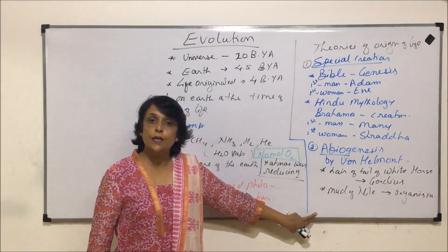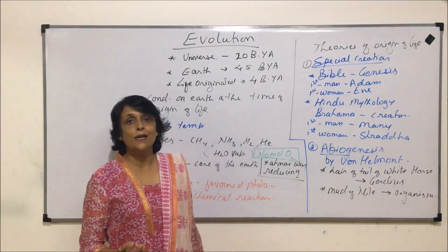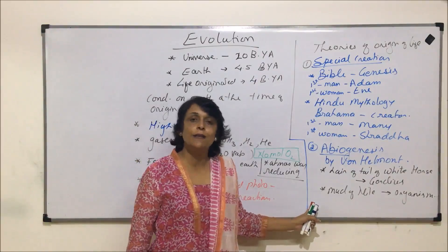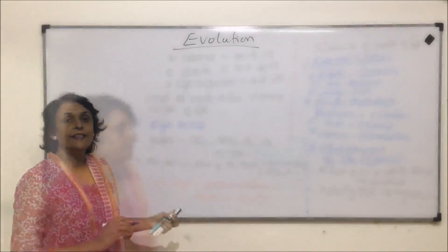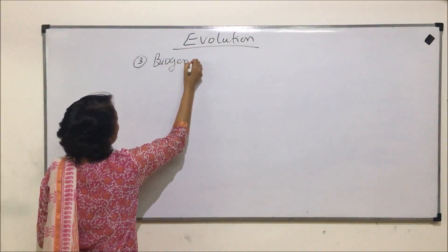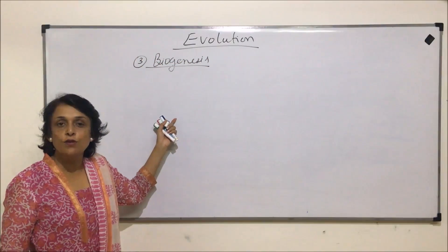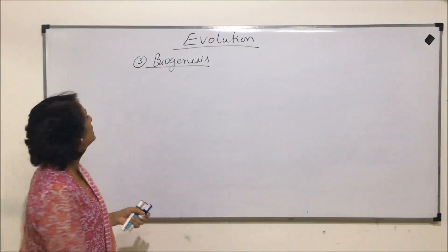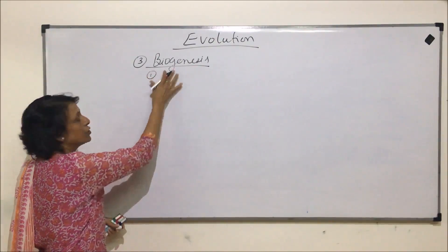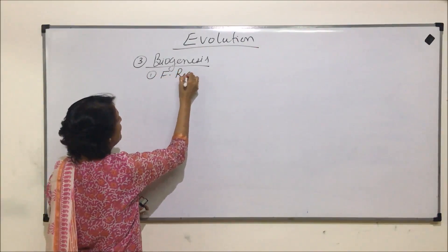says that life originated or originates from pre-existing living forms. There were three scientists who gave experiments in support of it. So let us talk about the third one, that is biogenesis. Biogenesis means that life is originating from pre-existing living forms. Here there were three experiments which were performed to support this theory. The first experiment was by Francisco Redi.